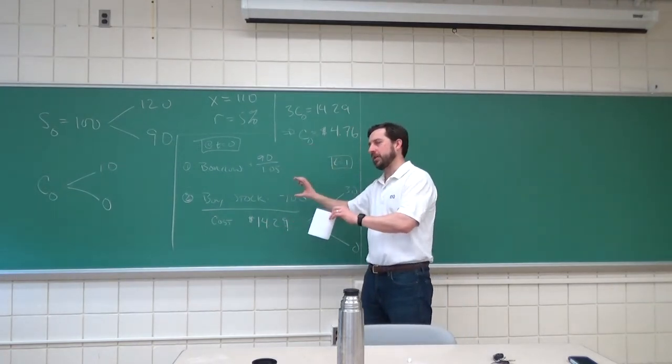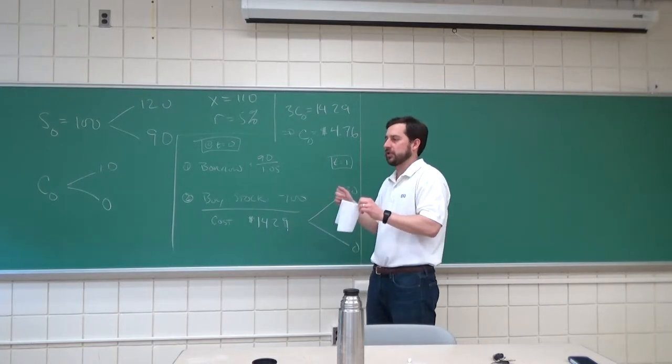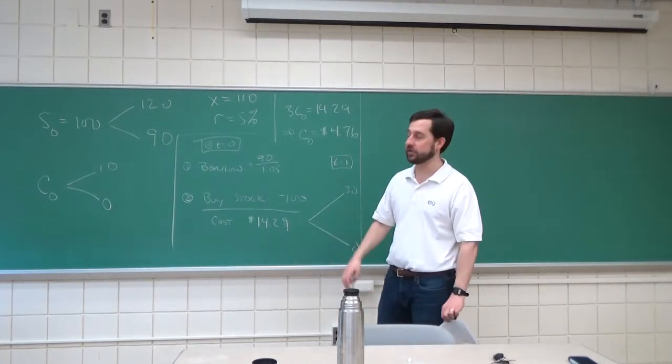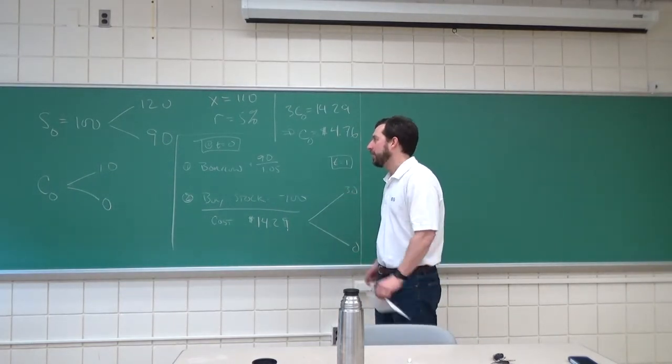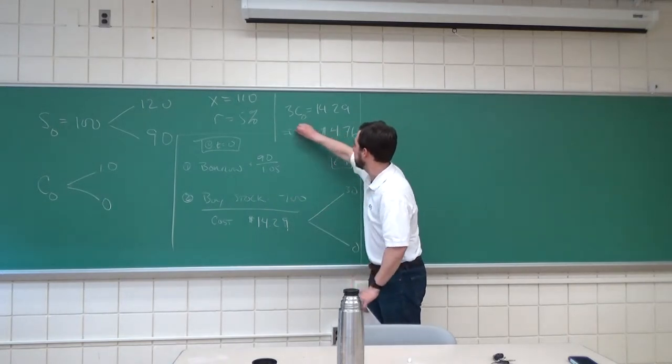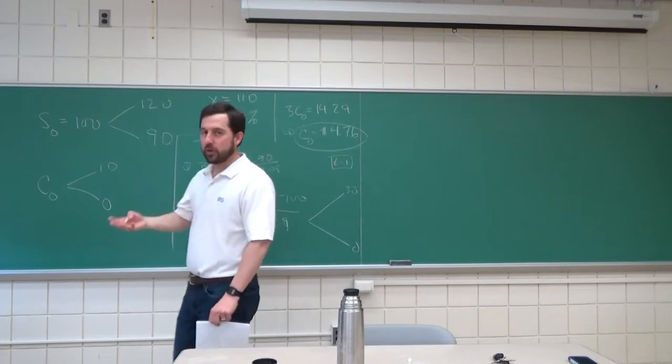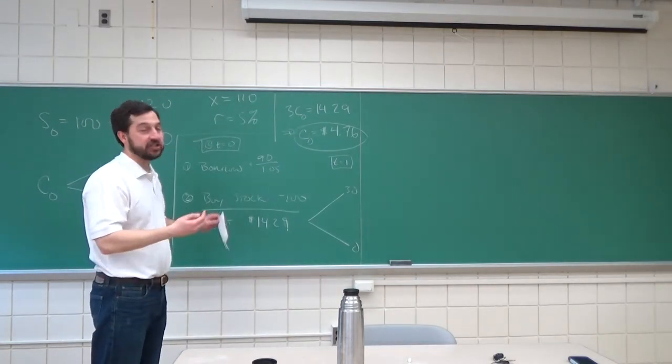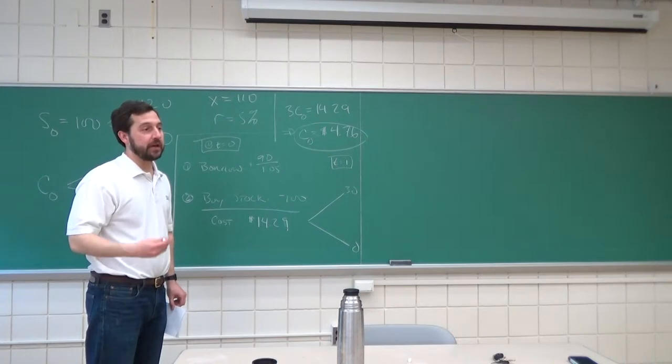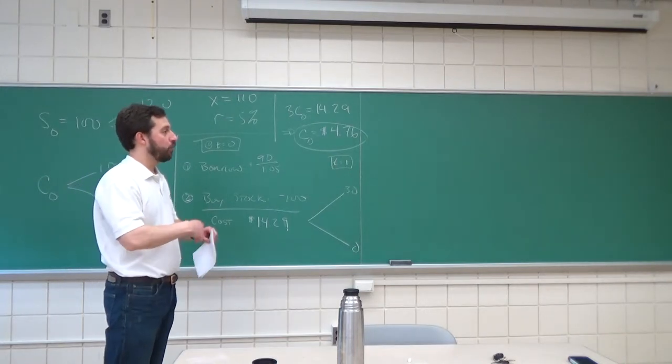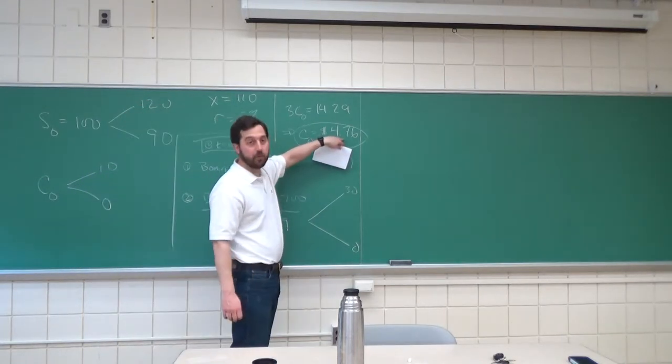Remember, we can either use a bond and a stock to replicate a call option, or we can use a stock and call to replicate a bond in the delta hedging approach. The question is now, this is by no arbitrage, that's the price of the call option. So, the question is, what if the price is different than that? Then, we should be able to create an arbitrage, which would push the price towards $4.76.